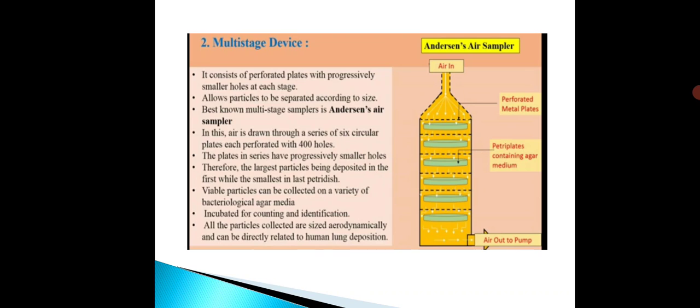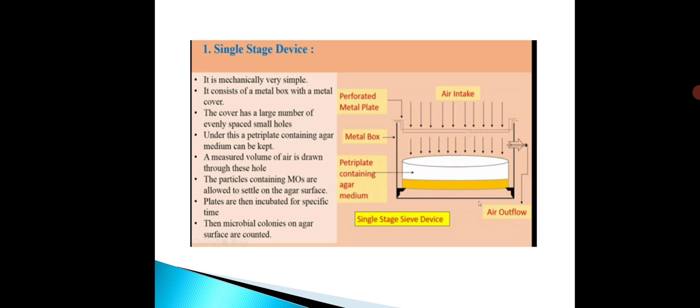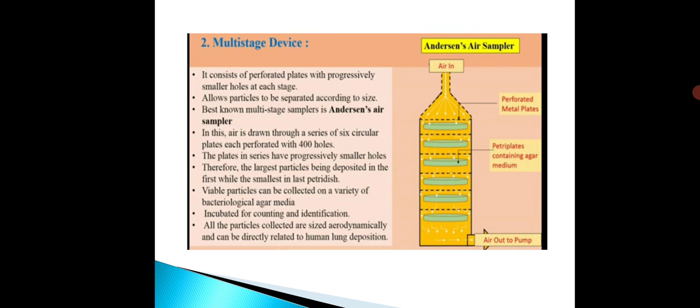To summarize, today we studied the first method — impaction on solid — with two device types: single-stage device with just one petri plate where air is allowed in and microorganisms settle for incubation; and multi-stage device (Anderson's air sampler) with six petri plates and six perforated metal plates of different pore sizes. Larger particles settle on the first agar plate and small-size microorganisms settle on the last plate because the final perforated plate has fine pores. In the next lecture we will discuss our next method. Thank you.